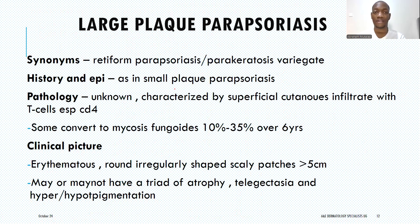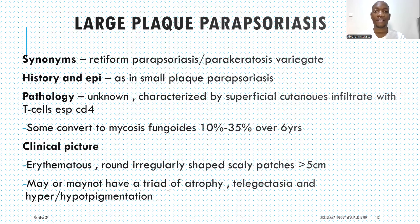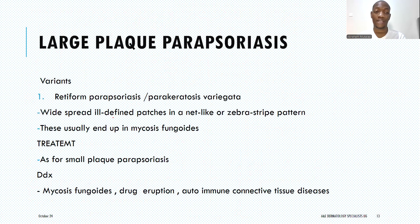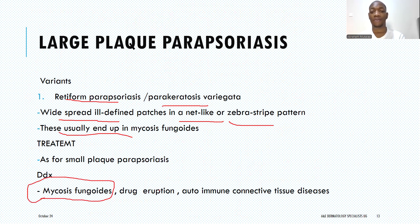Once you make a diagnosis of either small plaque or large plaque parasoriasis, you need to follow up these patients to make sure they don't develop mycosis fungoides. In the clinical picture, we see erythematous, round or irregularly shaped scaly plaques over five centimeters in diameter, which may or may not have a triad of atrophy, telangiectasia, and hyper- or hypopigmentation. Variants include retiform parasoriasis or parasoriasis variegata, presenting with widespread ill-defined patches in a net-like or blastic pattern, which can progress to mycosis fungoides. Treatment is similar to small plaque parasoriasis, but a biopsy must be taken to exclude mycosis fungoides.